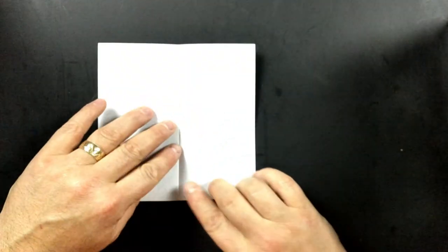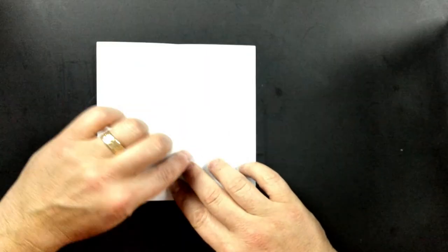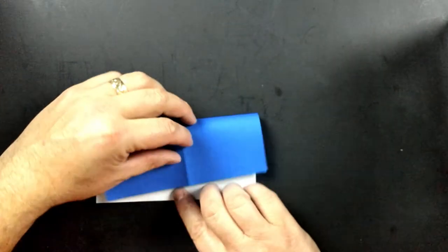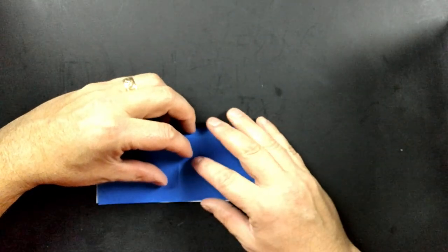Open it back up, and we're going to do the same thing again, but this time the top is going to go down to the bottom, so the folds will cross over each other.